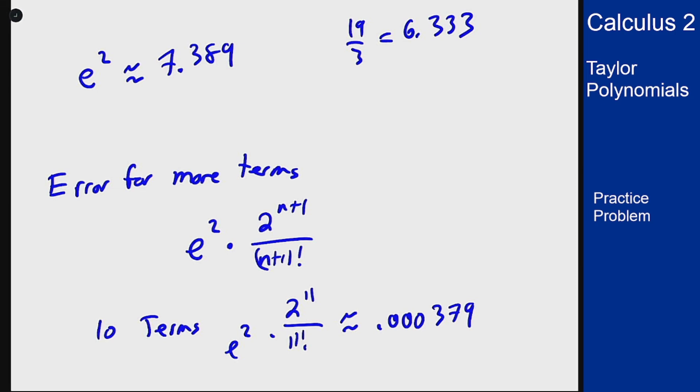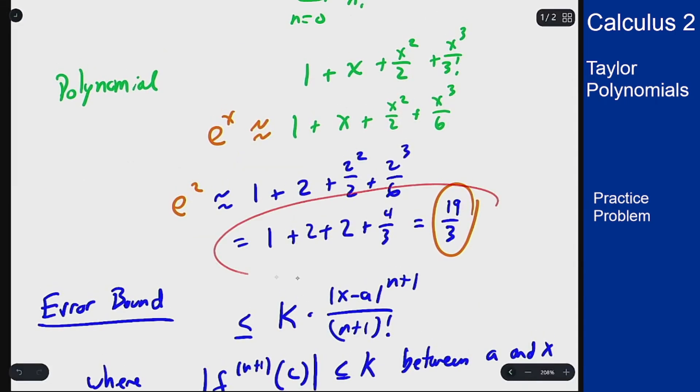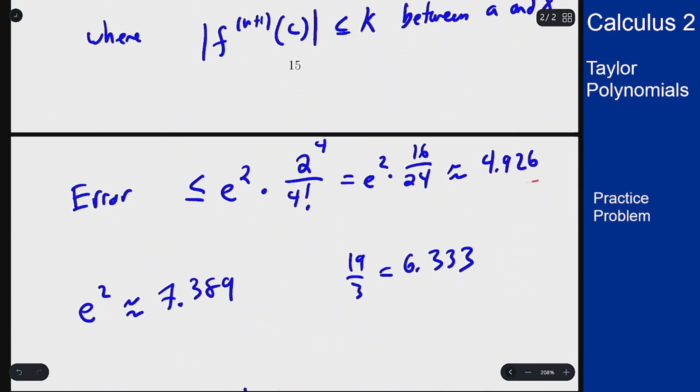That's how you look at a Maclaurin series. Figure out the Maclaurin polynomial and use it to estimate a value, and then discuss the error bound and how it relates to the actual error between your approximate value and the actual value of the function at your desired point.